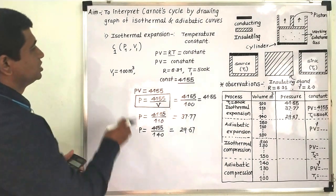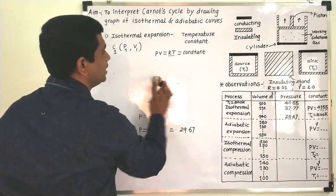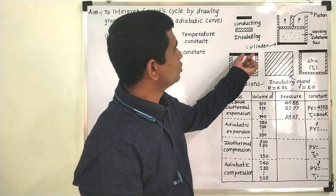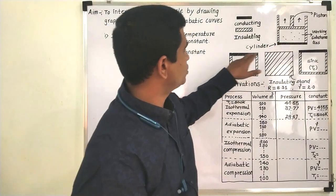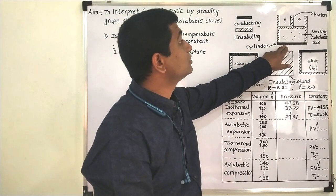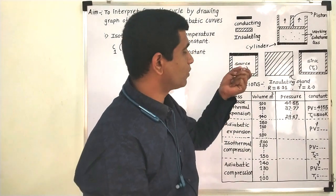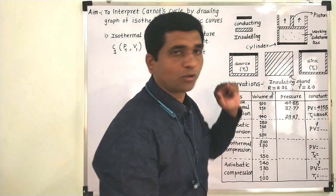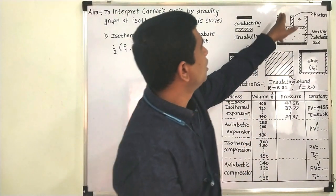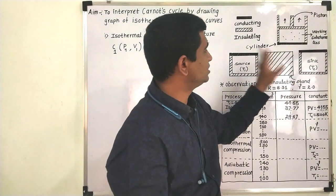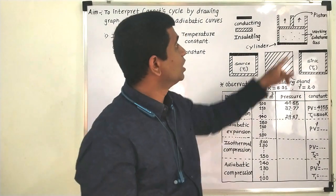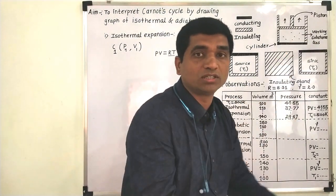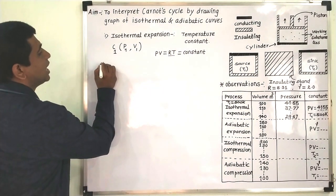For the next process — adiabatic expansion — the cylinder is removed from the source and placed on an insulating stand. Since all surfaces are now insulating, the gas neither takes heat from nor gives heat to the surroundings. This is called an adiabatic process. The piston is adjusted to allow expansion, and the volume goes from 150 to 190.